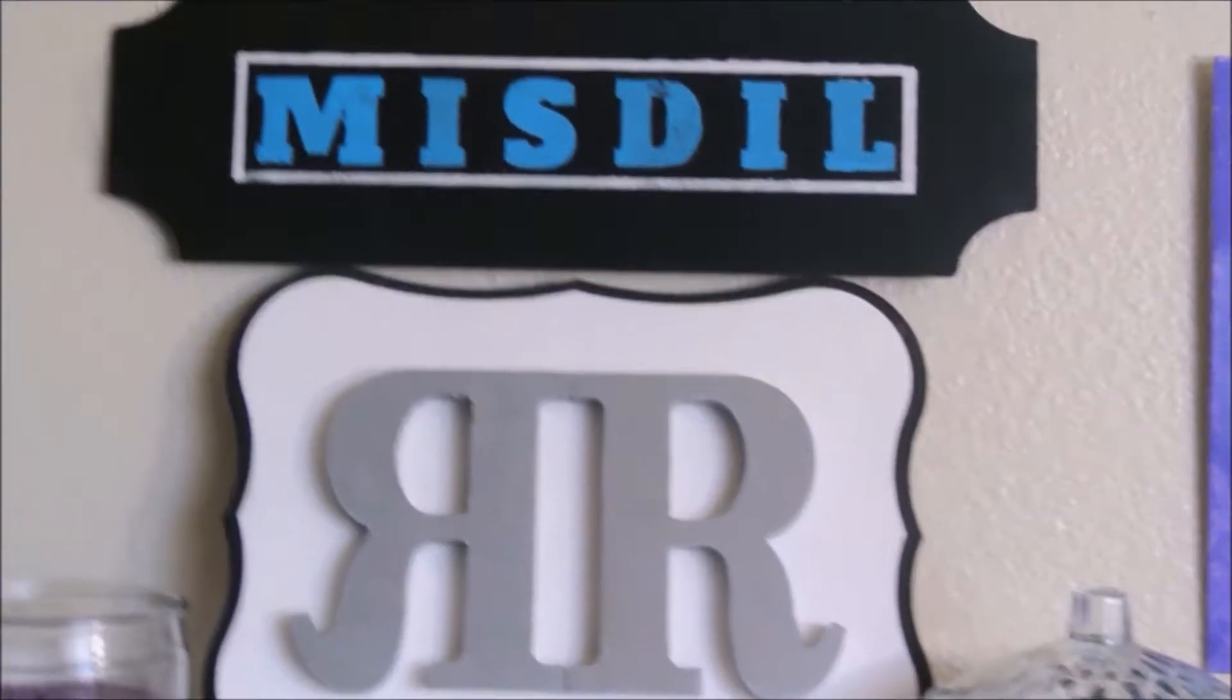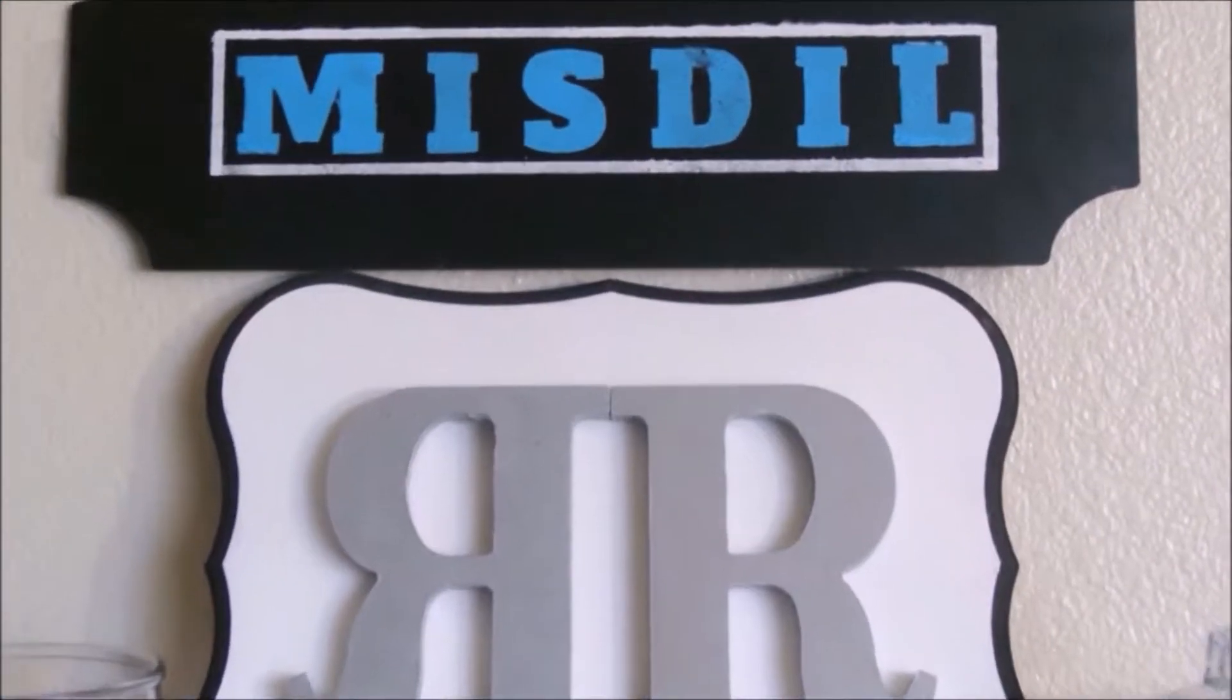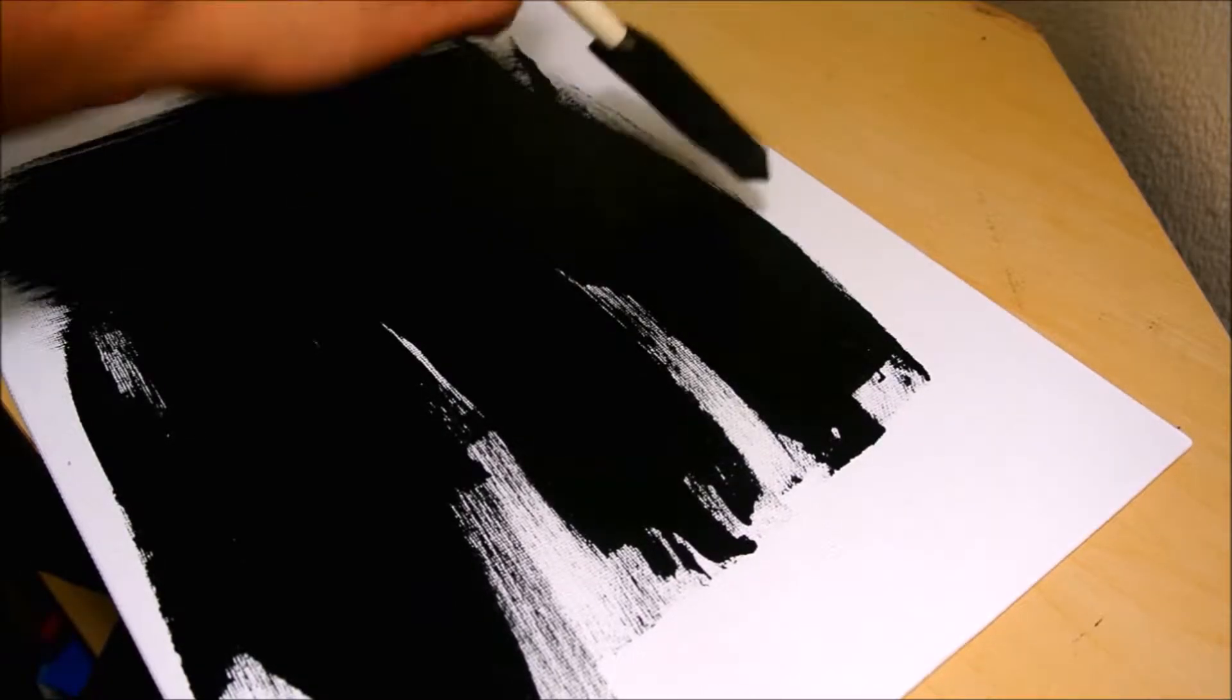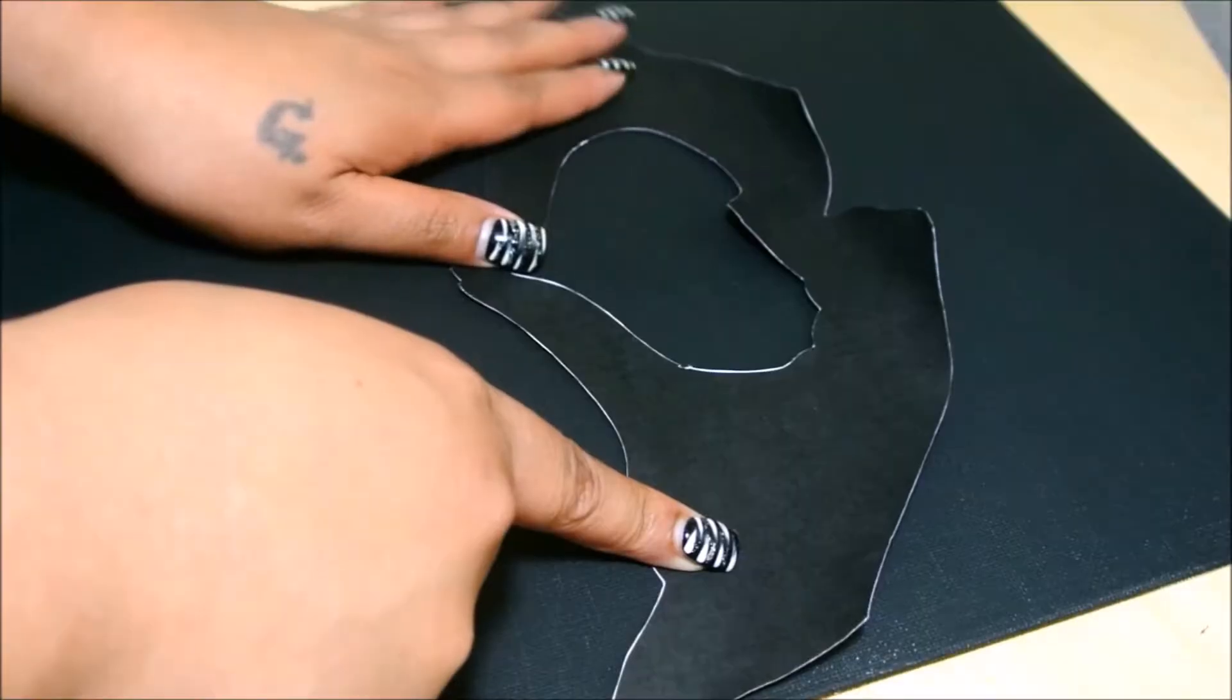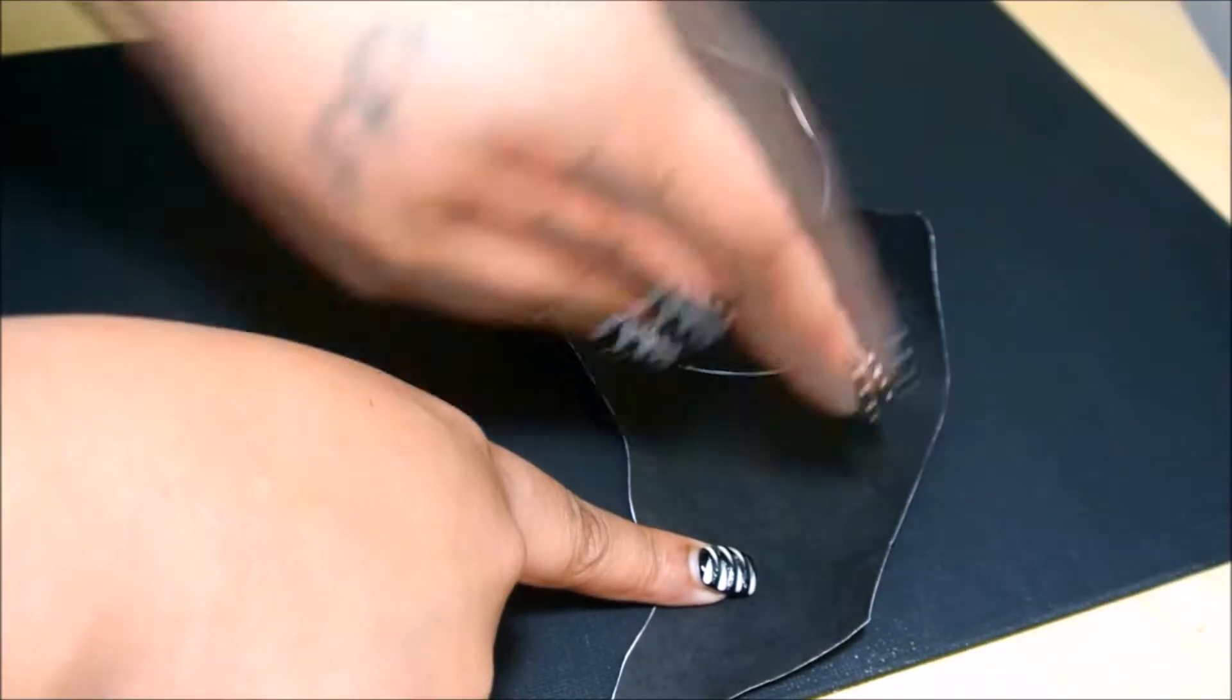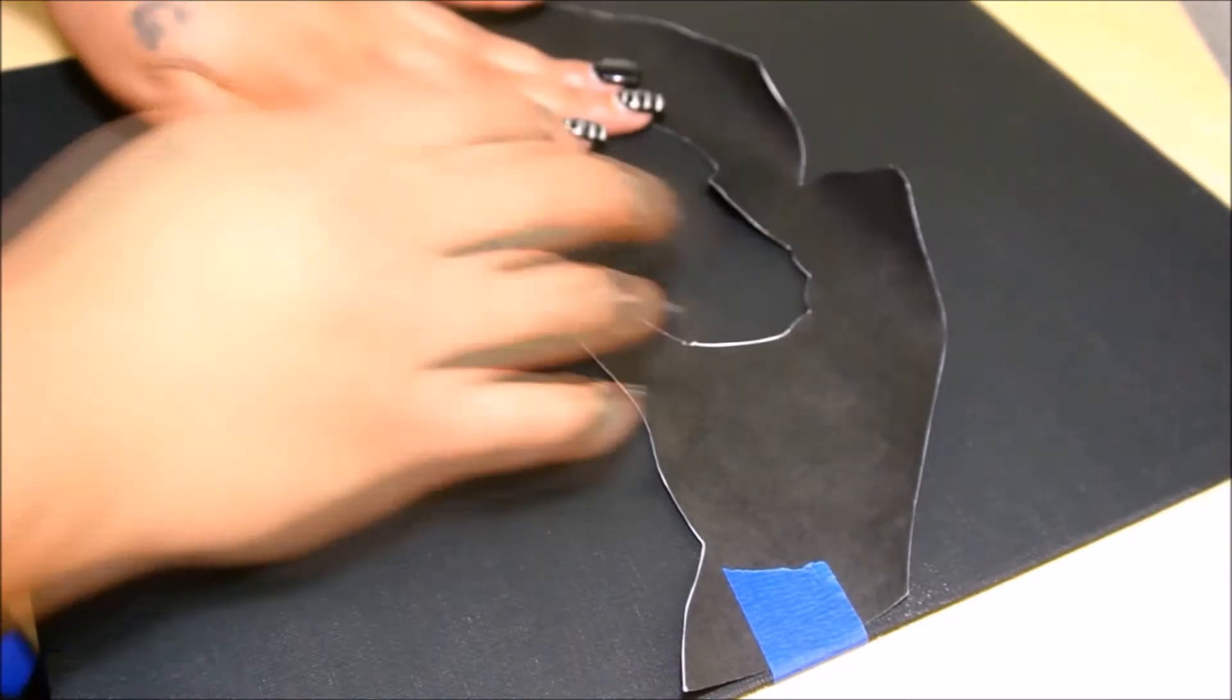Now for the next DIY, you'll need three canvases. You can choose three different size canvases but I chose to use three of the same size. The first canvas I started by painting it black. Then with a stencil that I printed out, I taped it on a bit off center of the canvas.